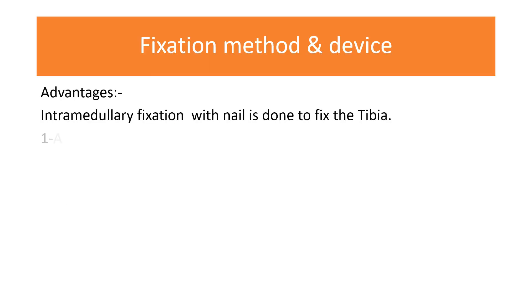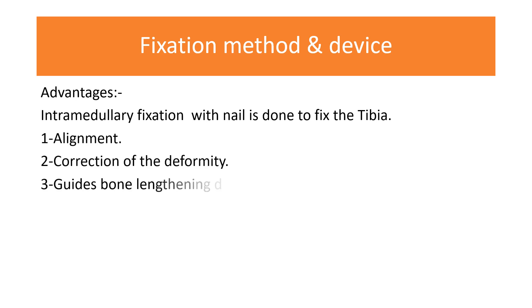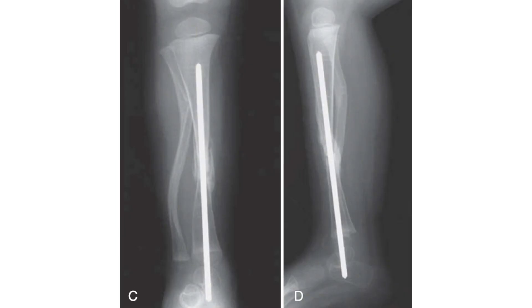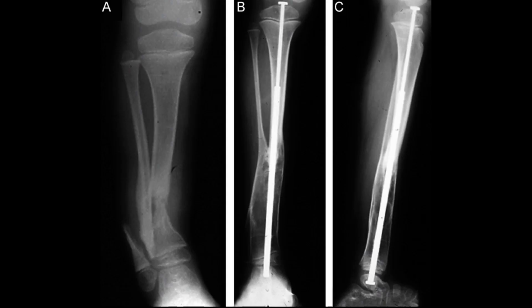Intramedullary fixation has certain advantages over other methods because it addresses alignment, corrects deformity, and guides bone lengthening during growth. Usually telescopic nail, Fassier-Duval nail, or pins are placed in the medullary cavity. A growing rod or telescoping rod is utilized.